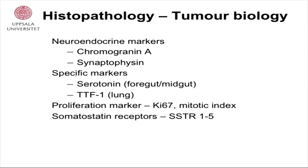Something about the tumor biology: this is the staining when doing biopsies, histopathology. These tumors express the neuroendocrine markers Chromogranin A and Synaptophysin. We have specific markers to test for, such as serotonin, which can indicate if the tumor is originating in the small bowel or somewhere else. TTF1 positivity indicates the tumor comes from the lung. The proliferation marker Ki-67 is very important — it's expressed as percent of proliferating cells, and is one of the bases for deciding treatment of individual patients.